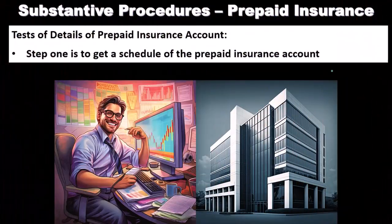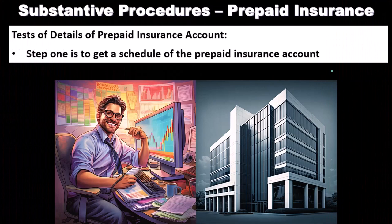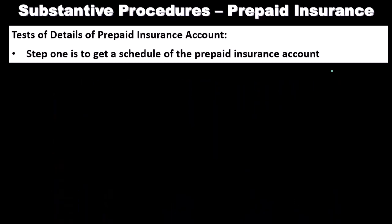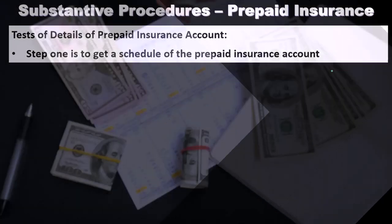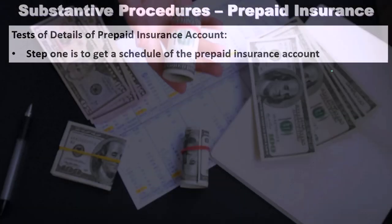For publicly traded companies, the adjusting entry should have been completed, meaning they would post the payment to prepaid expenses — an asset, not a liability. Then at the end of the time period, typically a month, they would make the adjustment to record the amount that has expired and the amount that remains in prepaid expense.